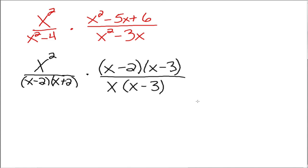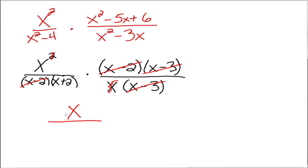Now when we multiply these things together, we have all this stuff in the top and all this stuff in the bottom. We look for common factors. We have an x minus 3 in the top and an x minus 3 in the bottom — those divide out and leave just a 1. We also have an x minus 2 here and an x minus 2 down here — those also divide out. So we're left with x squared times 1 all over x plus 2 times x on the bottom. We've got x squared on top and x on bottom, so one x cancels, leaving just x on top and x plus 2 on the bottom.